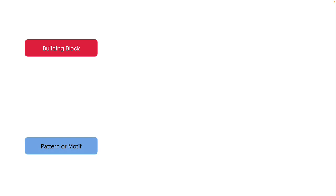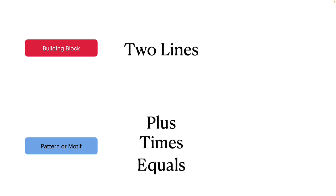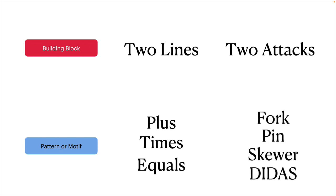To build any motif, remember there has to be a building block — a building block that leads to a pattern or motif depending on how you combine, rearrange, or reconfigure it. In the example I just gave, two lines rearranged became a plus, a multiplication sign, or an equals sign. Similarly in chess, you have two attacks which, when combined into a pattern or motif, can lead to one of the tactical motifs: a fork, a pin, a skewer, or a DDAS.